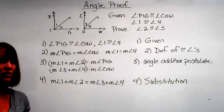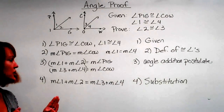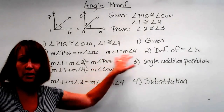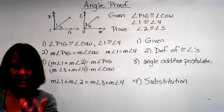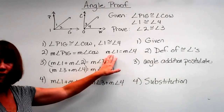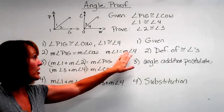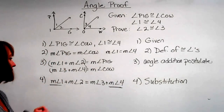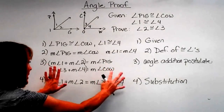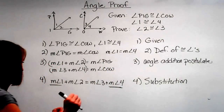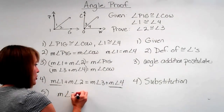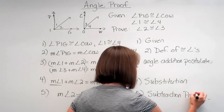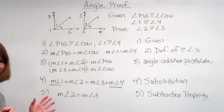Now, we've already been given that the measure of angle one and the measure of angle four are equal. These are real physical numbers — let's say angle one is 45 degrees, then angle four is also 45 degrees. That means they're the same unit, so I can subtract that unit from both sides by the subtraction property. If I subtract both sides, I'm left with the measure of angle two is equal to the measure of angle three, because we used the subtraction property.